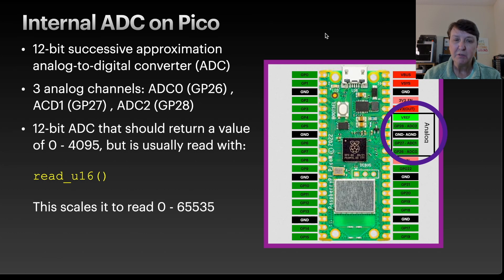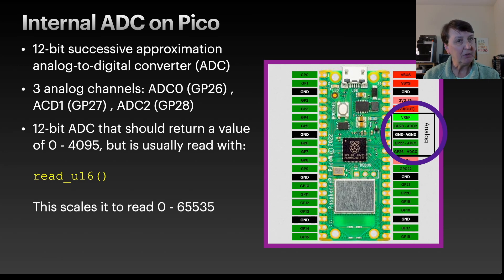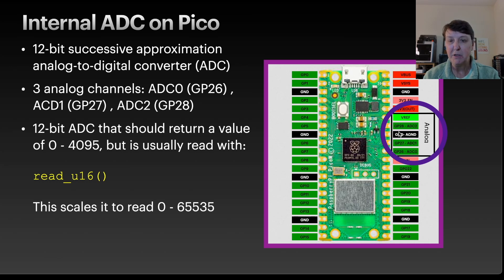Our analog-to-digital converter on our PicoW is a 12-bit successive approximation ADC. Successive approximation tells us how the ADC takes our input signal - a voltage level between 0 and 3.3 volts - and turns it into a digital number. There are three analog channels on our PicoW: pins 26, 27, and 28.